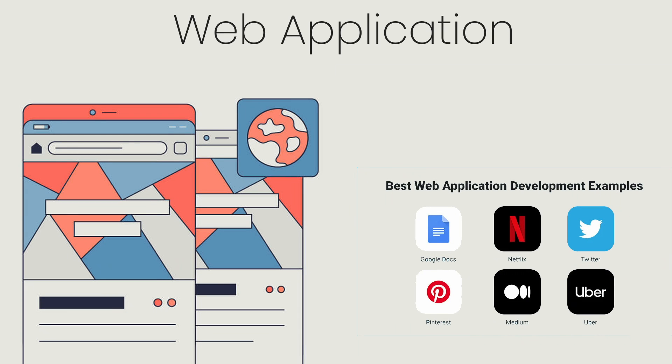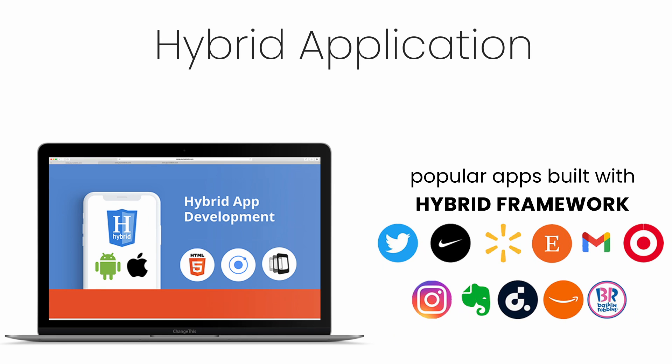Web applications are software apps that run on mobile devices in the same way as native mobile applications do. Web applications run in browsers and are often developed in CSS, HTML5, or JavaScript. Hybrid applications combine the advantages of both mobile web and native apps. A hybrid app is made with HTML, CSS, and JavaScript, and it runs on a mobile web view.